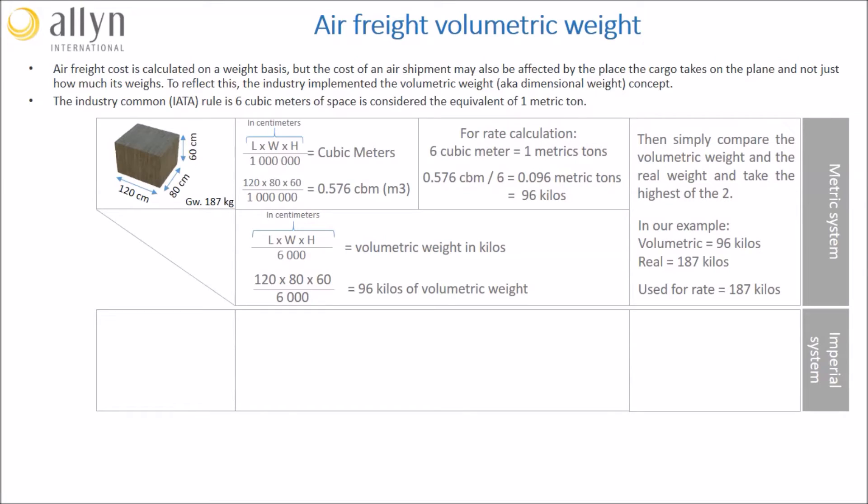This second methodology is the one we propose to use for calculating volumetric weight using the imperial measurement system. Let's imagine that our case this time measures 50 inches by 40 for a height of 30 inches and a gross weight of 320 pounds. To calculate our volumetric weight, we will multiply the length by the width by the height in inches and divide this by 166, which will give us the volumetric weight in pounds. So, 50 times 40 times 30 divided by 166 gives us a volumetric weight of 361.44 pounds.